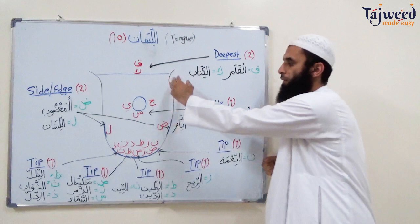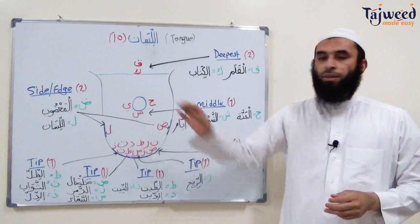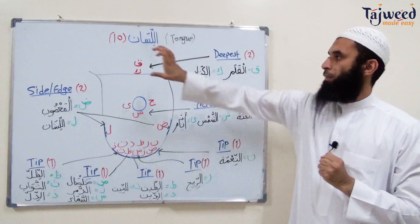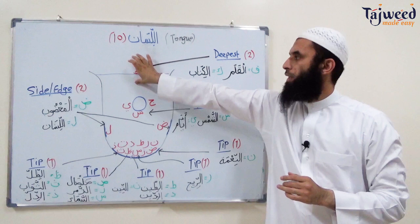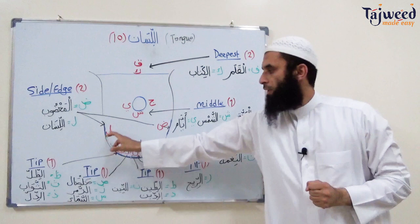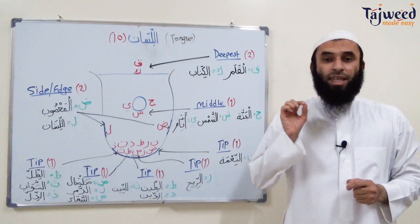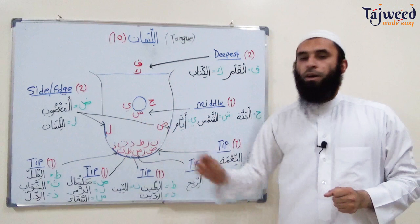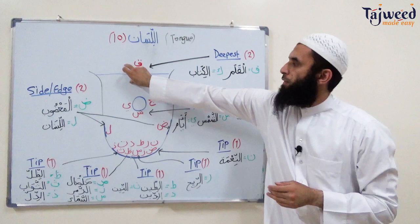Al-lisan means the tongue. There's a drawing of the tongue on the board. The tongue has four different areas that letters can come out from: the back of the tongue near the throat, which is the deepest part; the middle side of the tongue; the sides of the tongue; and the tip of the tongue. Within these four areas, there are ten specific makhraj points for eighteen letters.